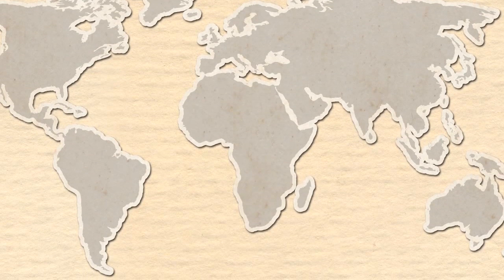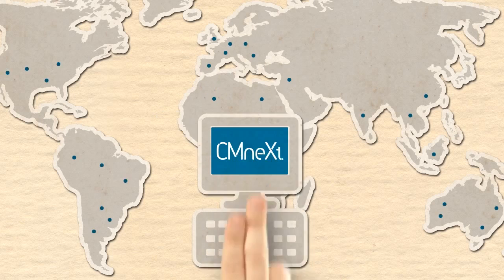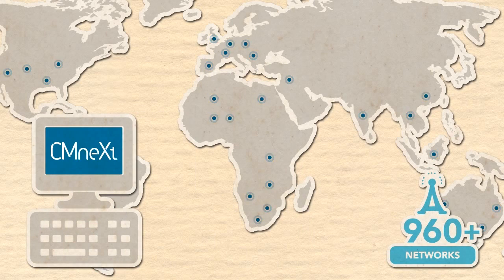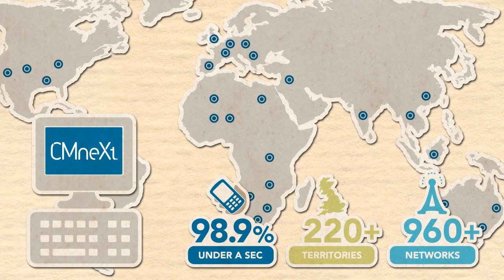Clickatel can deliver your authentication PINs through our next-generation SMS gateway, CMNext, to more than 960 mobile networks in more than 220-plus countries and territories. CMNext successfully delivers up to 98.9% of messages submitted to it in under a second, making it a truly enterprise-grade technology.